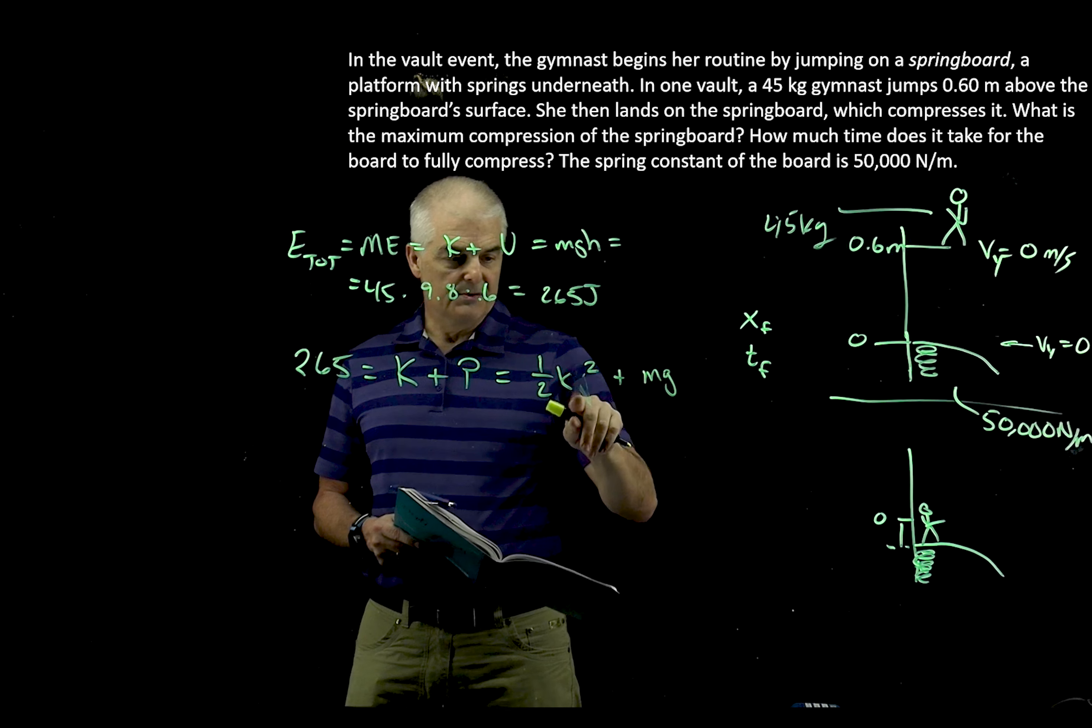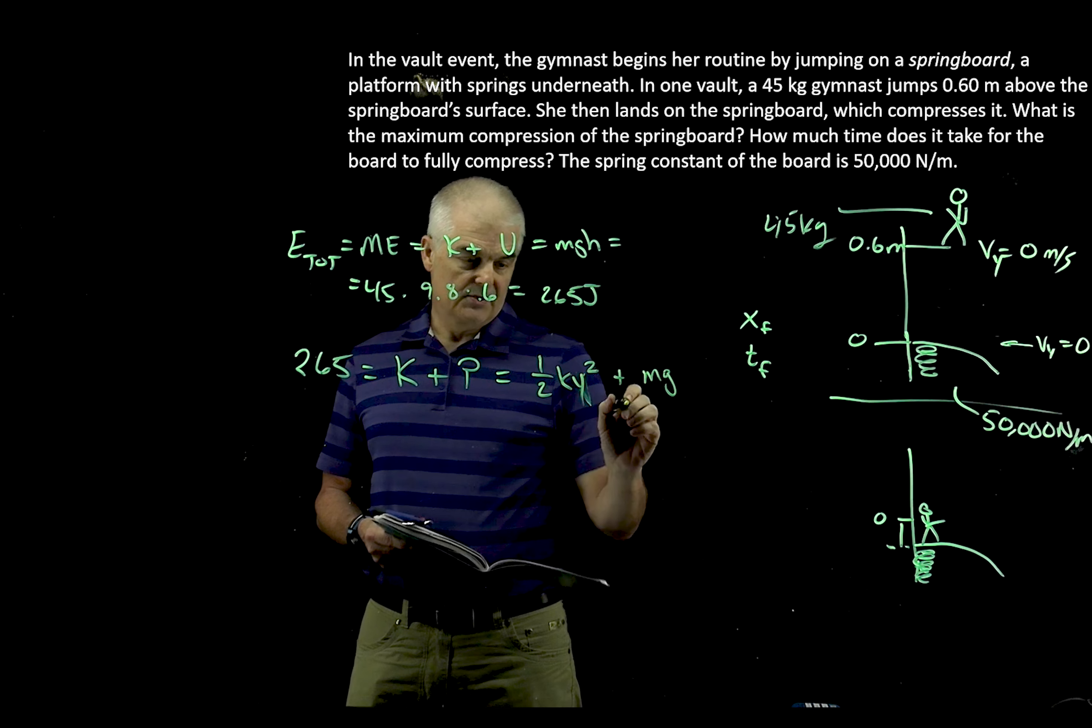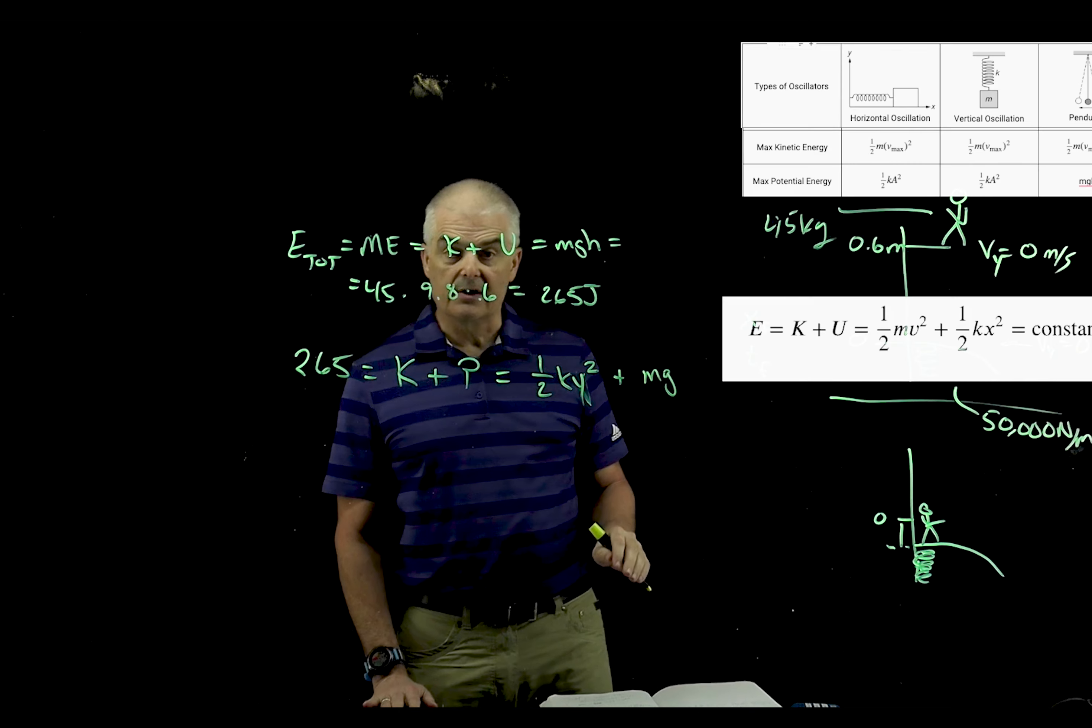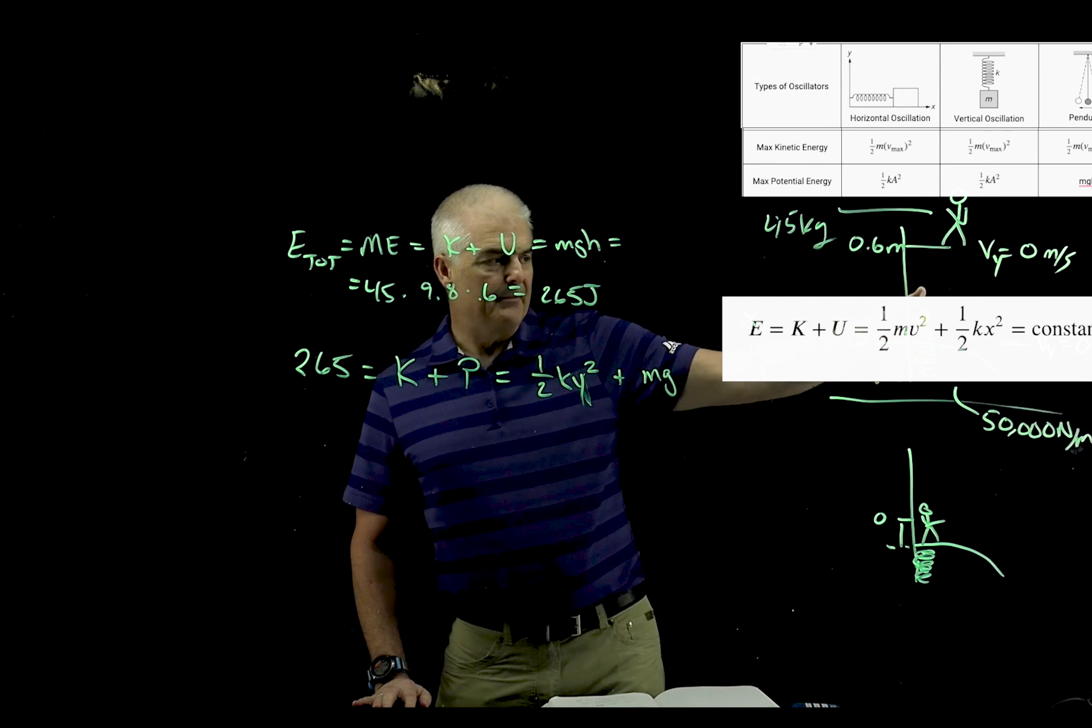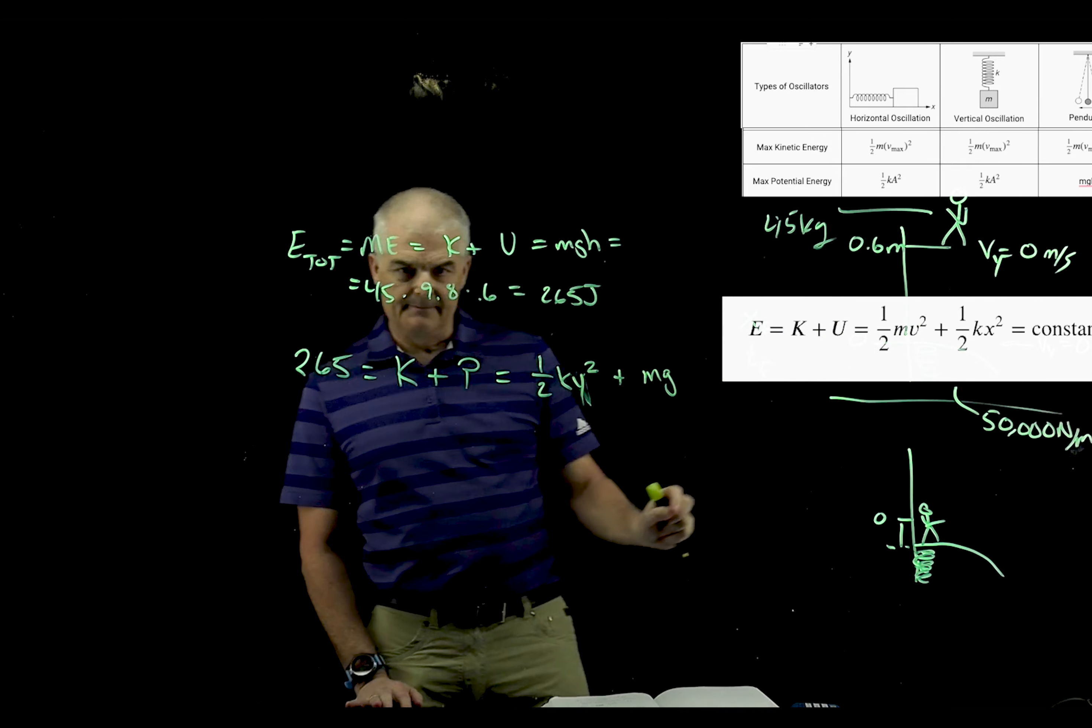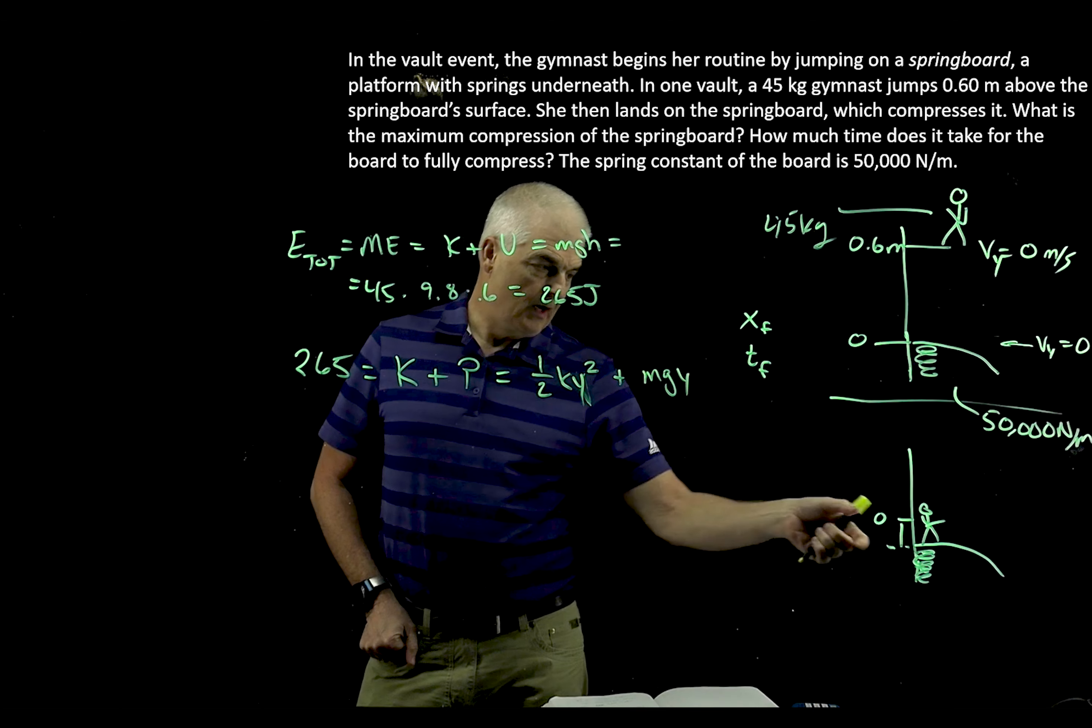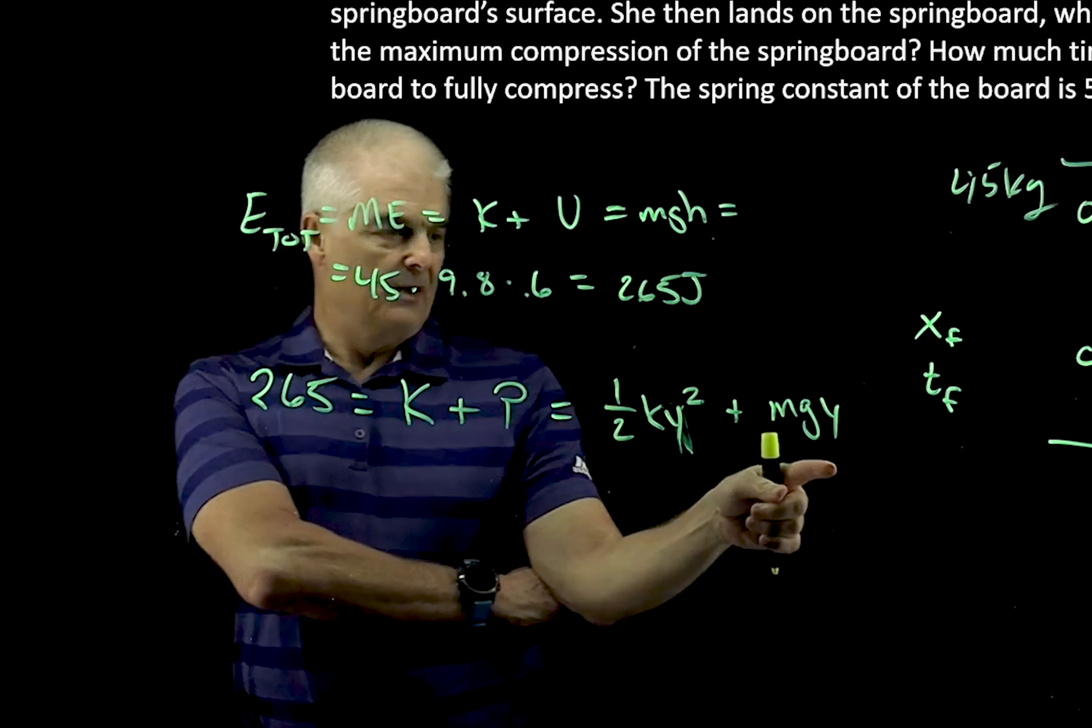Plus, she also has some potential energy because of her height. She's not at the zero mark, plus MG. In this case, we would say k y squared, where y is the amplitude. If you recall, the energy is one-half k a squared. That's the gap between this height and this height. This is the MG, and this is also y, not really h. It's the height.